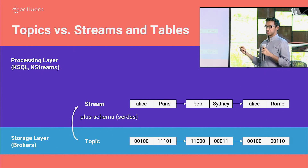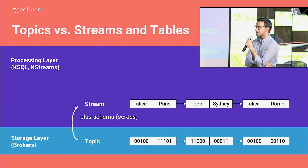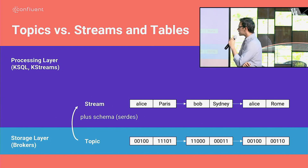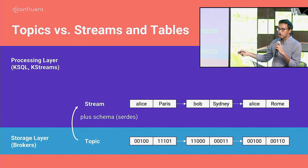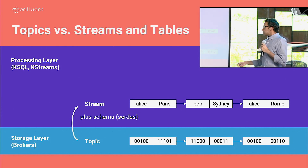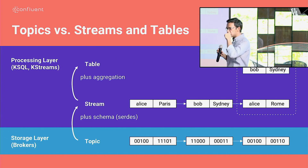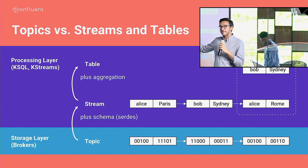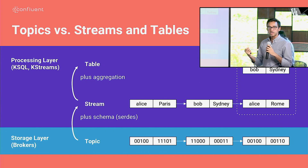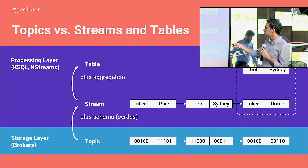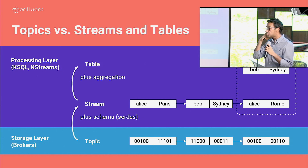Both Kafka Streams and KSQL have this notion of a stream and a table. A stream is really a topic with a schema that allows you to serialize and deserialize the data within that topic. The raw data might represent Alice and Bob and the cities they've been to. But there's also an aggregated view called a table. A Kafka table is very different from tables in relational databases — a Kafka table acts more like a materialized view. These tables use a compacted topic underneath, and based on when changes are made to the topic, that's what's aggregated and shown to you for querying.